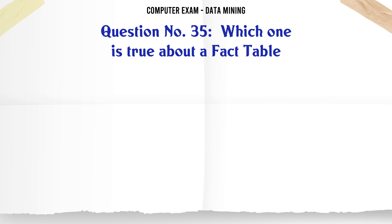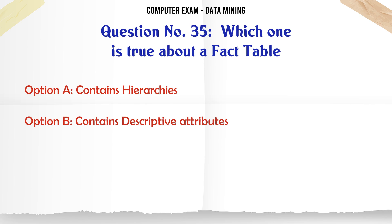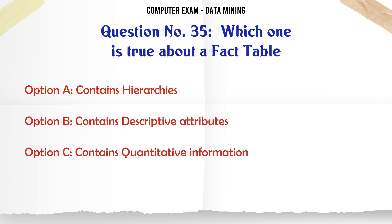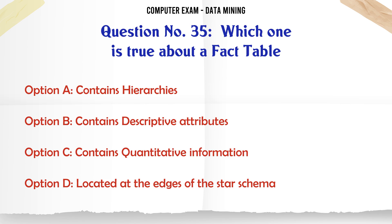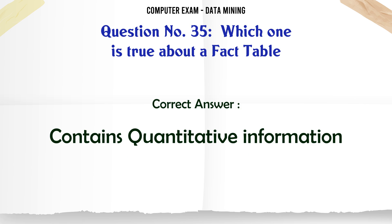Which one is true about a fact table? A. Contains hierarchies. B. Contains descriptive attributes. C. Contains quantitative information. D. Located at the edges of the star schema. The correct answer is: Contains quantitative information.